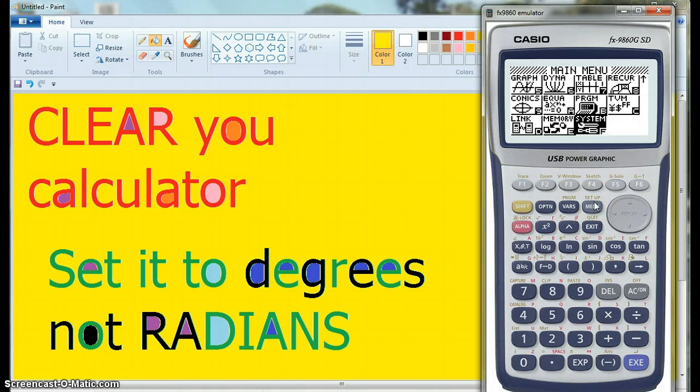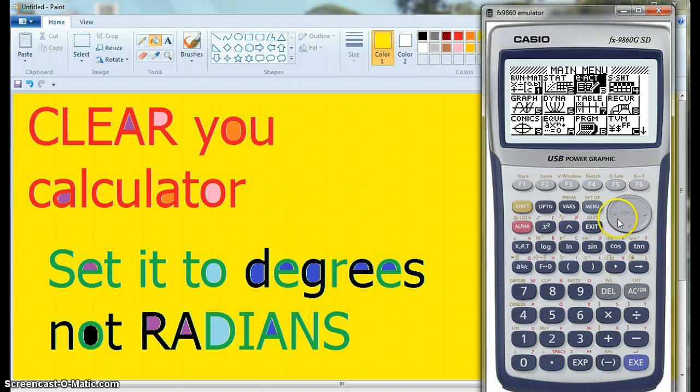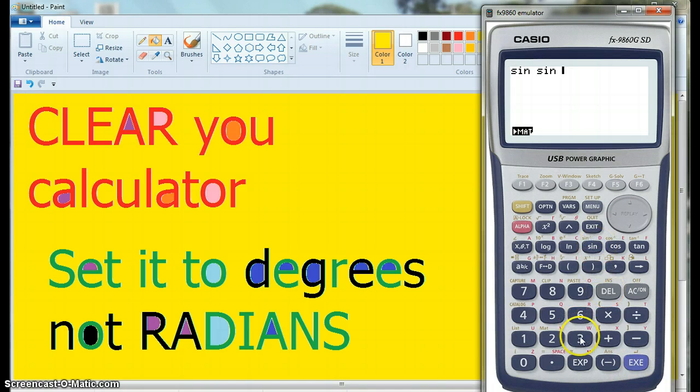Now we're going to go back to the menu, and how are we going to change it? Test for radians, so we're going to run. Now, I'm going to go sine of 30 degrees. Oops, I didn't mean to double sign it. Let's try again.